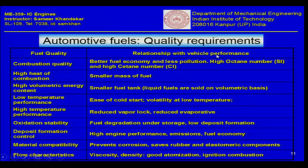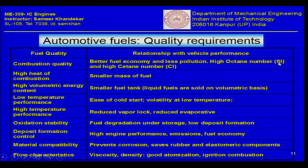The relationship with vehicle performance is important — for example, better fuel economy can be achieved with less pollution. Combustion quality is defined by several parameters, one very common one being the octane number or the cetane number. The octane number is an index of combustion quality for petrol engines (SI engines), while the cetane number is used to define the quality of combustion for diesel fuels in compression ignition engines.